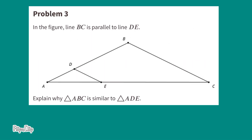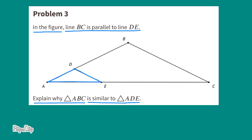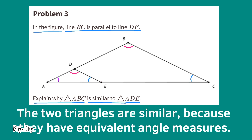Problem number three. In the figure, line BC is parallel to line DE. Explain why triangle ABC is similar to triangle ADE. The two triangles are similar because they have equivalent angle measures.